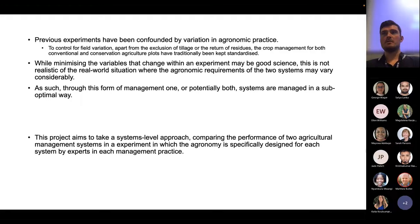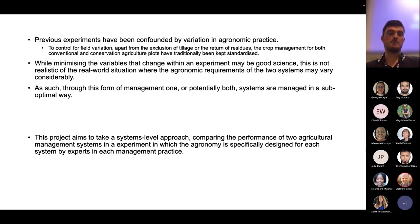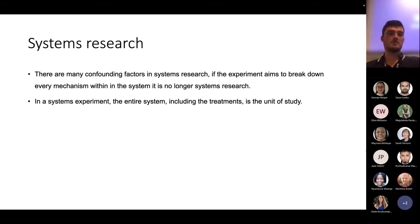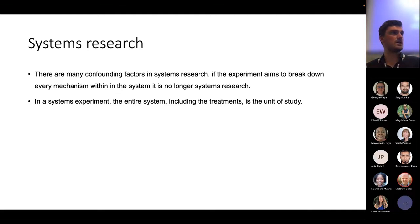In some experiments, one management or sometimes both is performed in a sub-optimal way, which is not realistic of field conditions. The aim of this project is to take a systems level approach looking at agricultural practice in the UK and implementation of conservation agriculture. In systems research there are many confounding factors - you cannot try to break down every mechanism within a whole system otherwise it's no longer systems research, and in field experimentation it's quite impossible to isolate all of those variables.